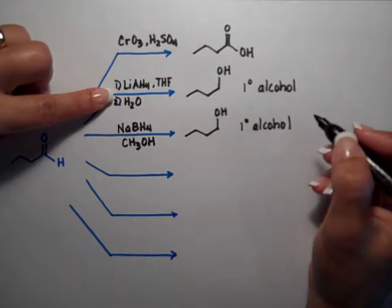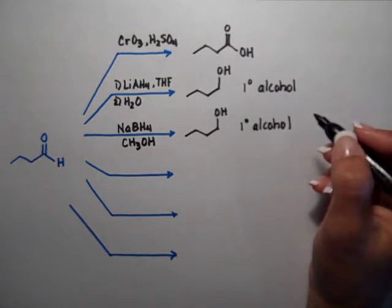The main difference between lithium aluminum hydride and sodium borohydride is that sodium borohydride can only reduce ketones and aldehydes. Lithium aluminum hydride can reduce carboxylic acids, esters, cyanides, a lot more range when you use lithium aluminum hydride.